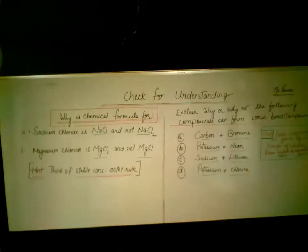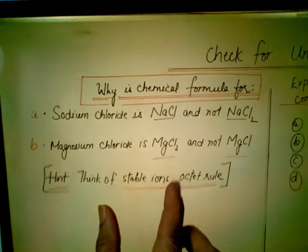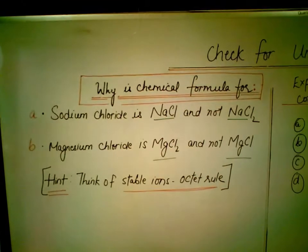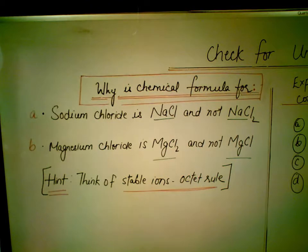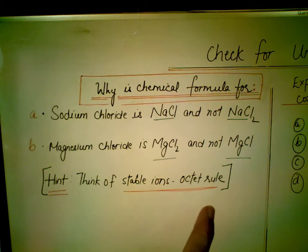Here's a check for understanding: Why is the chemical formula for sodium chloride NaCl and not NaCl2? Think about it. Similarly, why is magnesium chloride MgCl2 and not MgCl? The hint is to think about stable ions — how many electrons need to be lost or gained to complete the octet. That reasoning will lead you to the correct answer.